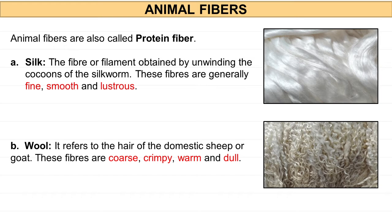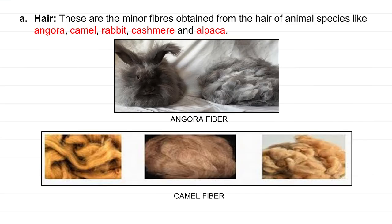Animal fiber, which we can also call protein fiber. Silk, which we get from silkworms, is a very fine, smooth, and lustrous fiber. Next is wool fiber — wool we get from goats and sheep. They are very warm and dull in color, and they are very crimpy and coarse fibers. Hair fibers come from animals like rabbit.